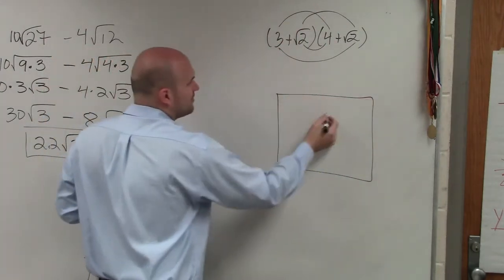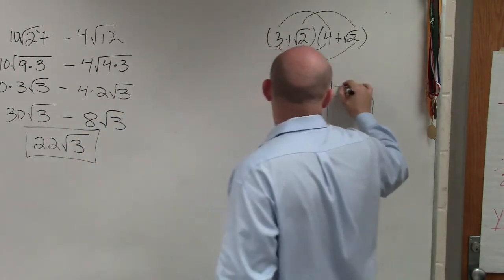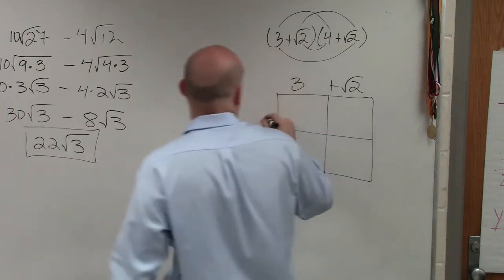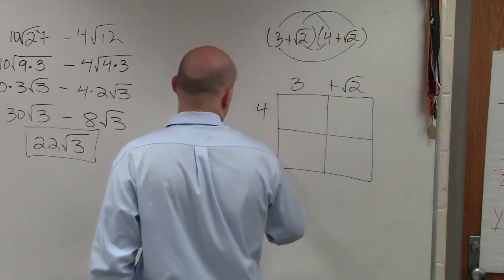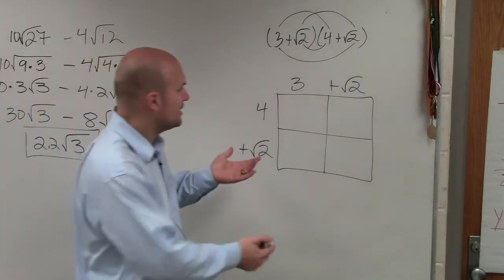Or the method that I would prefer is using the box method, where I'm just going to write one binomial on the top and the other on the side. Now all I do is I multiply the length times width of each box to obtain the area. Then I add all the areas of each of those four boxes to get the total area.